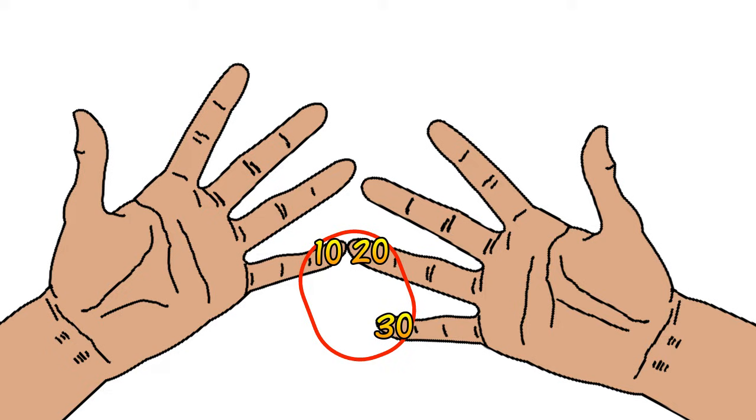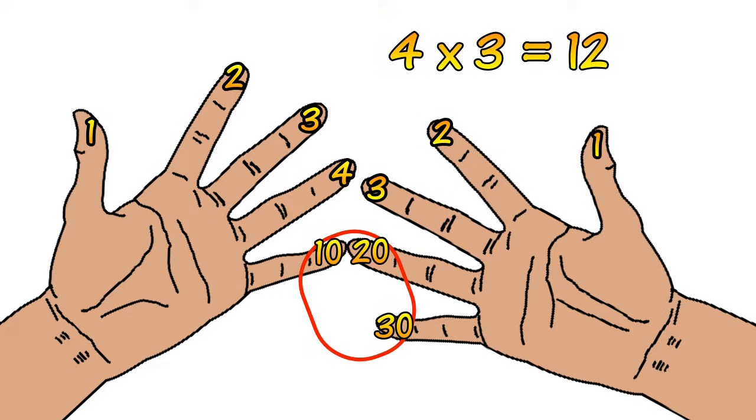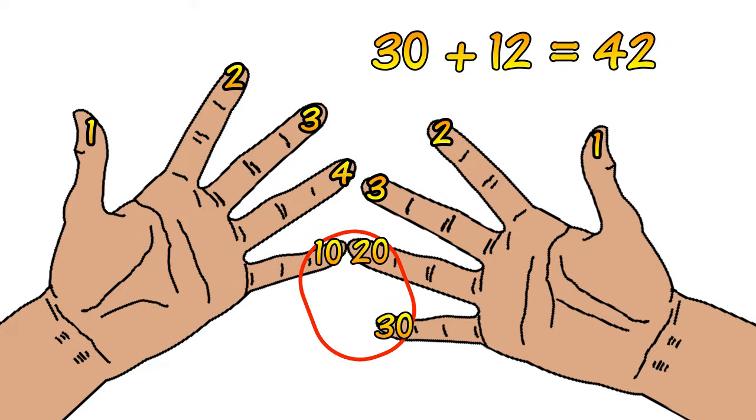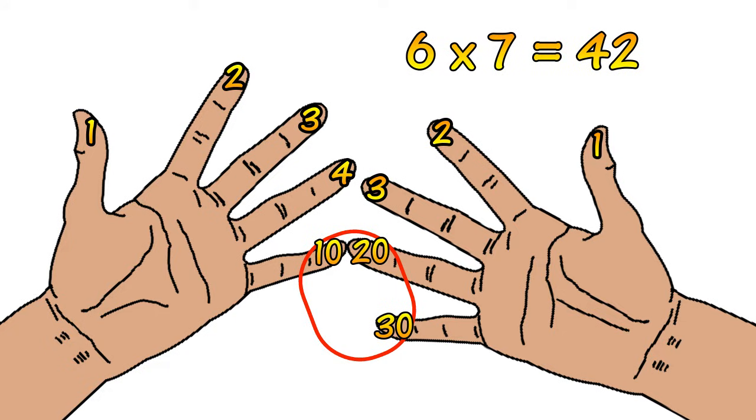So we have 30 from the join and below and then above the join we convert all these fingers into single units. So there are 4 units on the left hand and 3 units on the right hand. What you do with these units is you multiply them. So we have 4 times 3 which is 12. Then you get that 12 and you add it to the 30 we got from before and that makes 42. So 6 times 7 equals 42.